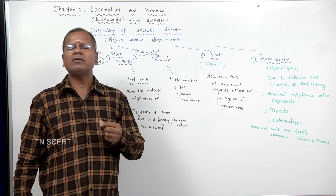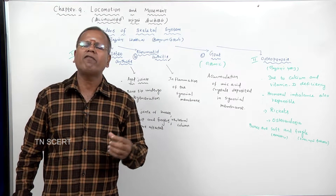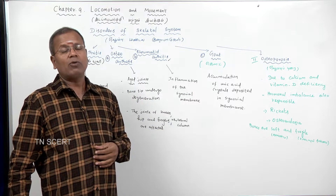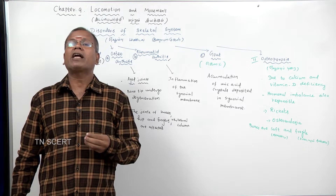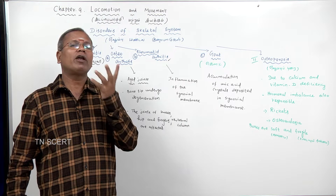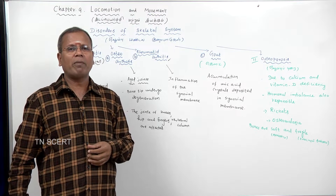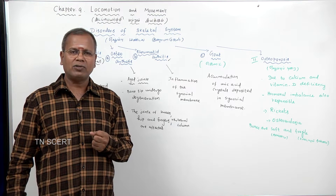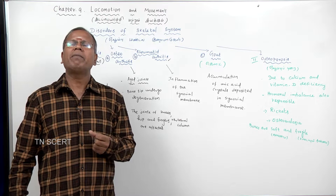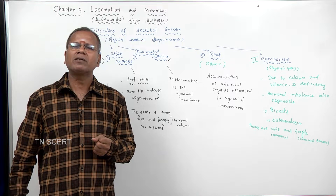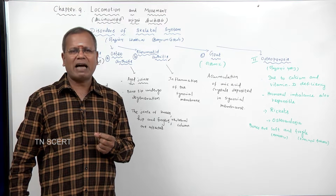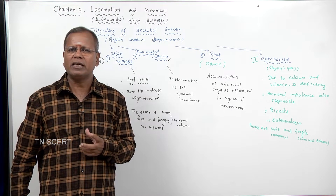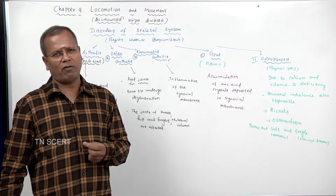Second is rheumatoid arthritis, which is an example of autoimmune disease. Other examples of autoimmune diseases include multiple sclerosis, insulin-dependent diabetes mellitus, myasthenia gravis, and rheumatic heart disease.